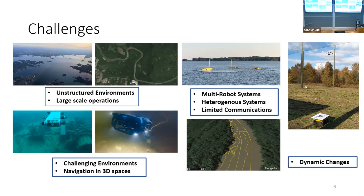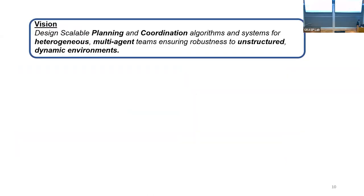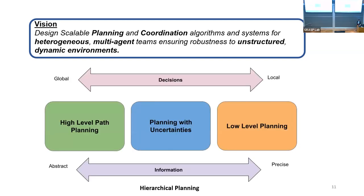Even if we generate a coverage path with simple paths along mobile motion, when we're dealing in the real environment we have real environmental forces affecting the robot — whether it's current or wind. With that said, my general research vision is to design scalable planning and coordination algorithm systems for heterogeneous multi-robot systems that ensure robustness to unstructured dynamic environments.